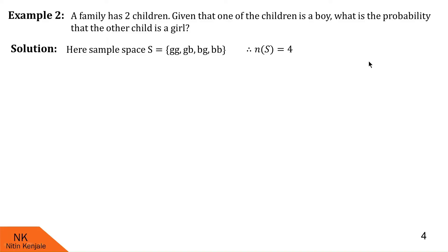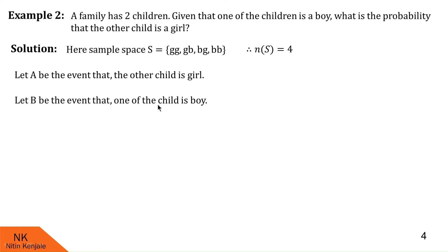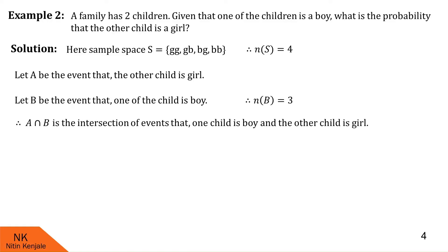We define event A as: the other child is a girl. We define event B as: one of the children is a boy. Looking at the sample space, there are three outcomes favoring event B where one child is a boy, so N of B is 3. A intersection B is the event that one child is a girl and the other is a boy. There are only two outcomes favoring A intersection B — GB and BG — so N of A intersection B is 2.